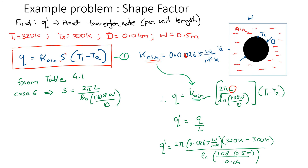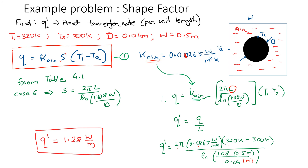Plugging in the values: q-prime = 2π × 0.0265 × (320 − 300) divided by ln(1.08 × 0.5/0.04). After calculating, we get a heat transfer rate per unit length of 1.28 W/m. The per-meter unit in the denominator reflects that we found the result per unit length. That's how you use a shape factor to find heat transfer rates in any scenario.